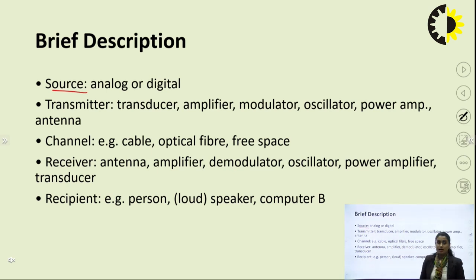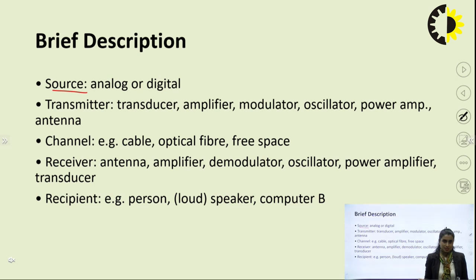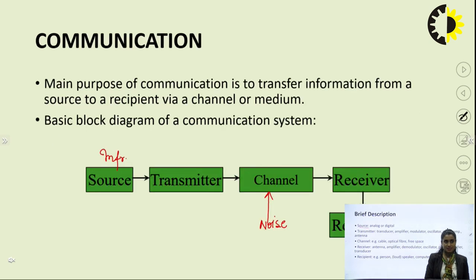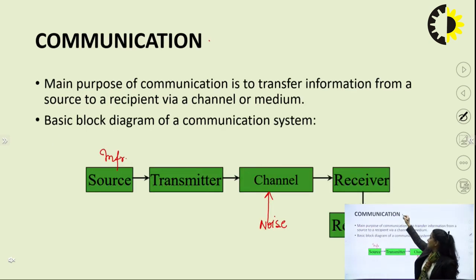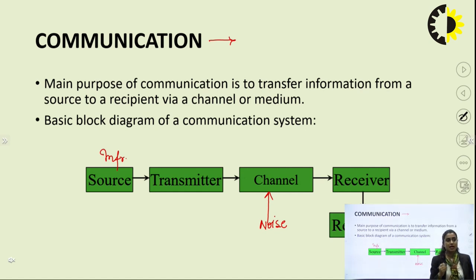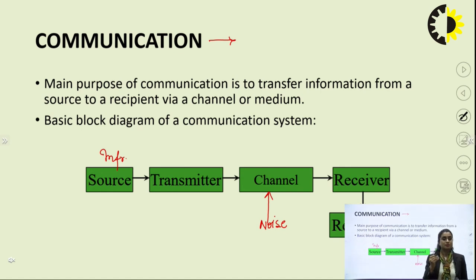The source could be either analog or digital in nature — it depends on what kind of message it generates, whether it generates an analog signal or a digital signal. Based on this, we can classify the communication system. On the basis of message signal, we can classify the communication system as analog or digital. If the signal being transmitted is analog in nature, that is called an analog communication system; if it is digital, it is called a digital communication system.